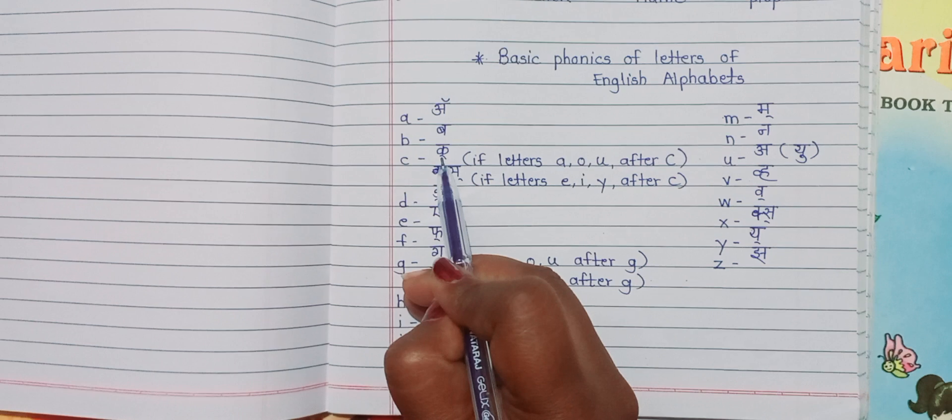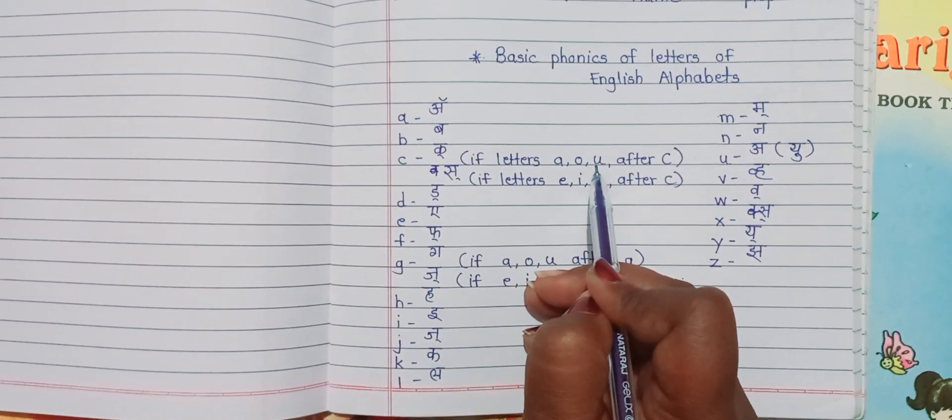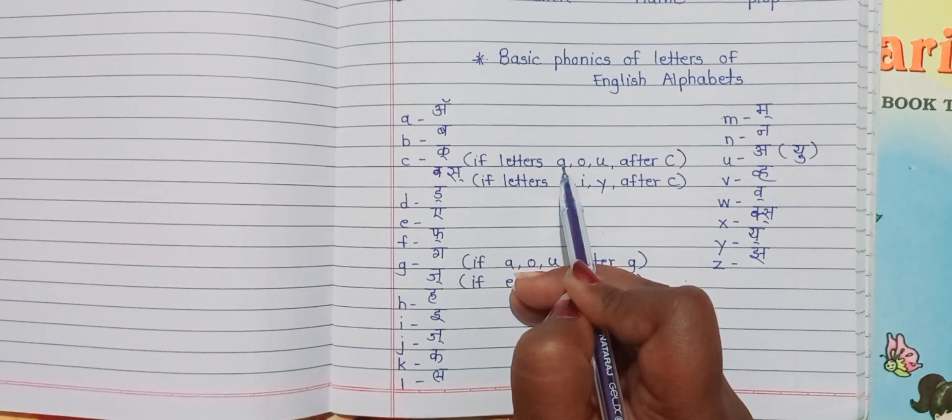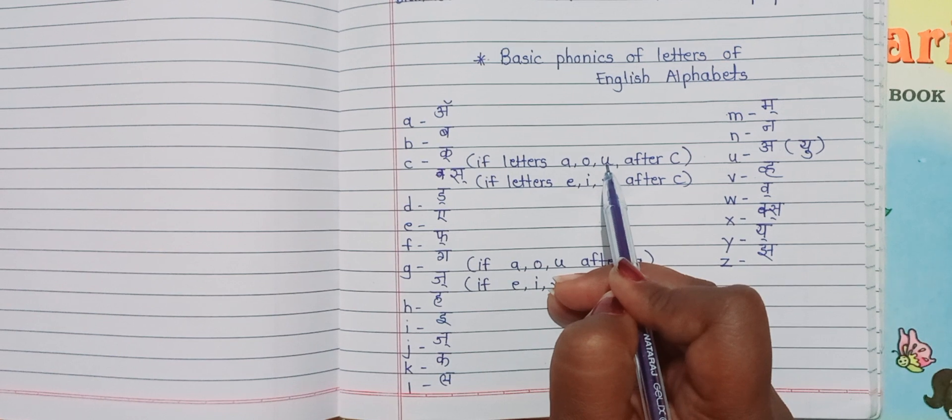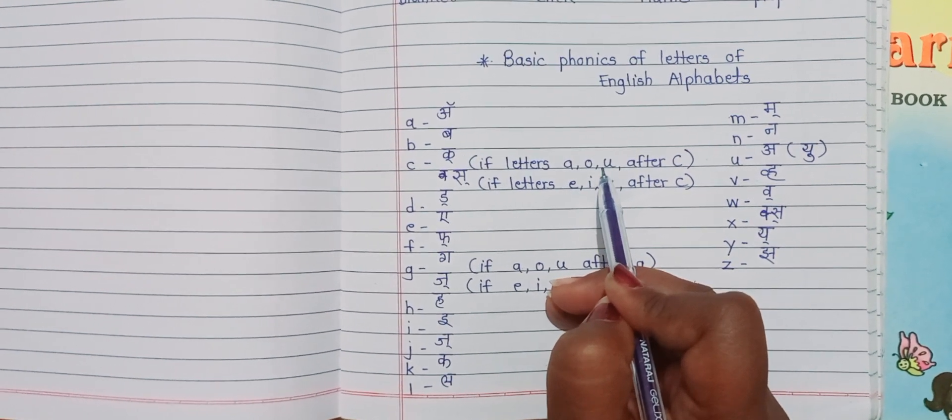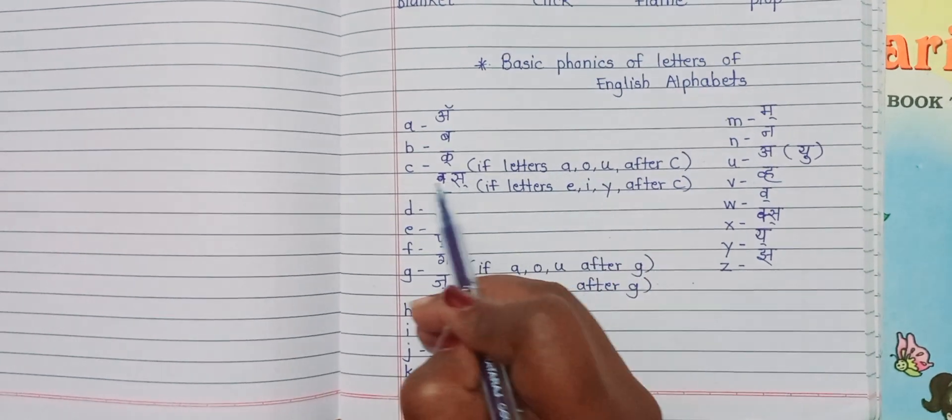C says K if it is followed by the letters A, O and U. For example, C-A-R, car, C-O-A-T, coat, C-U-T, cut. If it followed by A, O and U, then we should pronounce it as K.